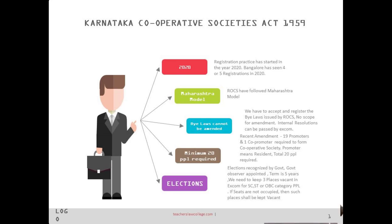On the day of nominations, suppose we have fixed the executive committee at 13 members — due to recent amendments limiting the number to 13. Out of those 13, three members must be reserved for SC/ST and OBC communities. If people from those communities are not available, those places must remain vacant and cannot be occupied by any other resident.